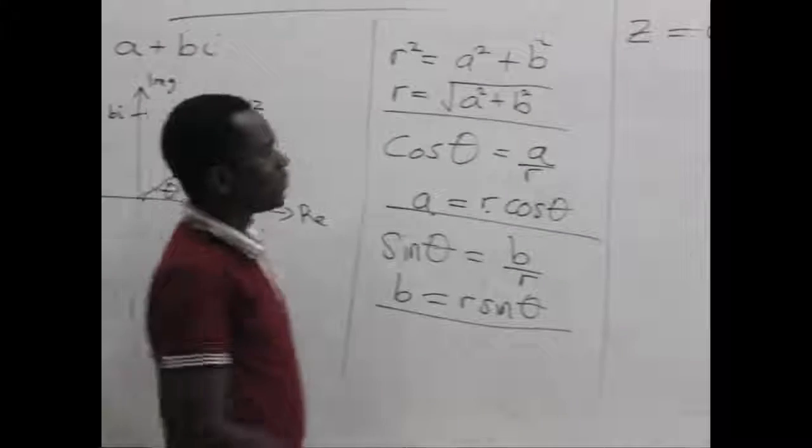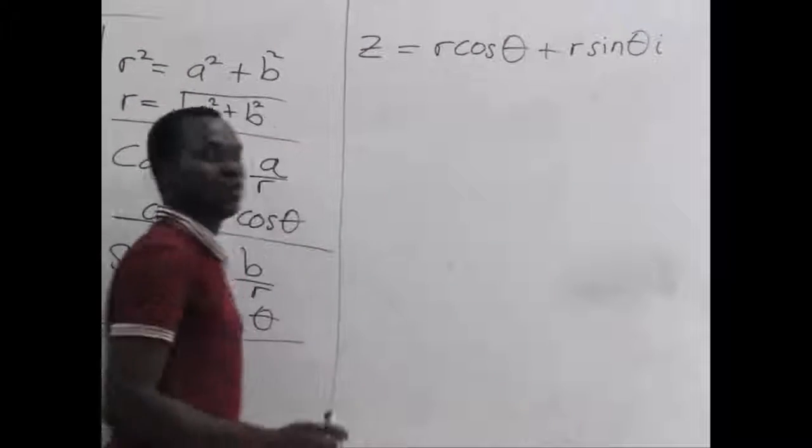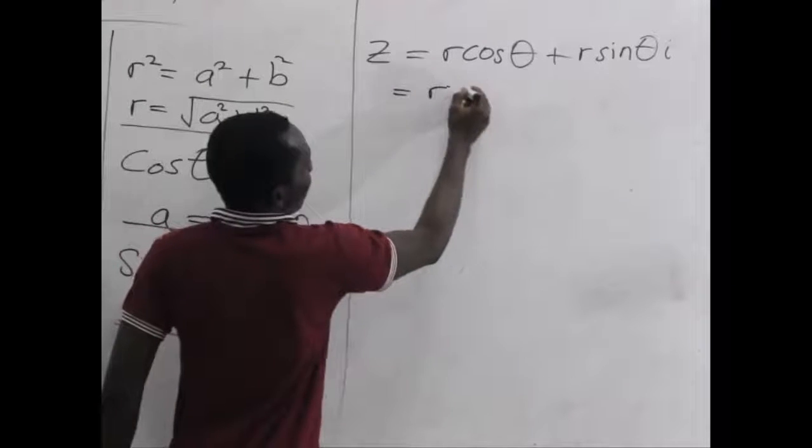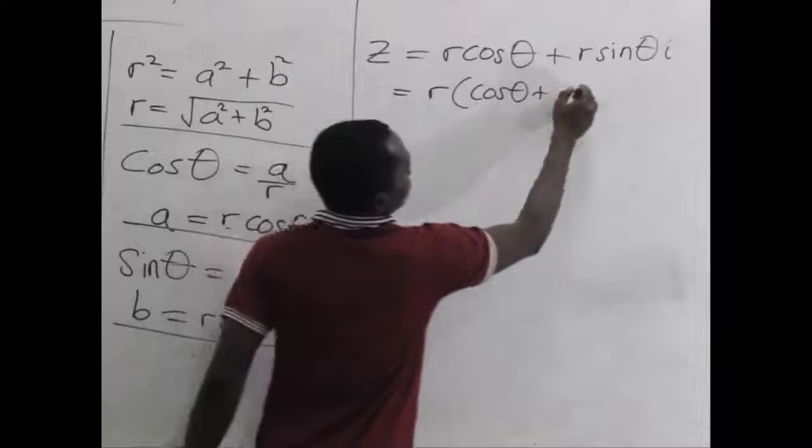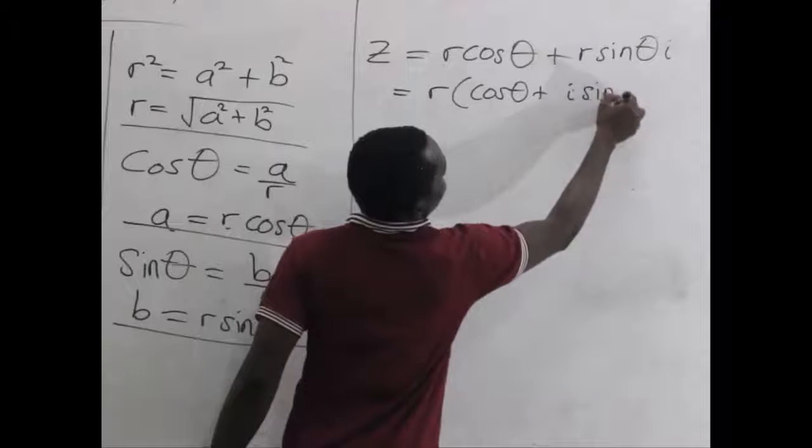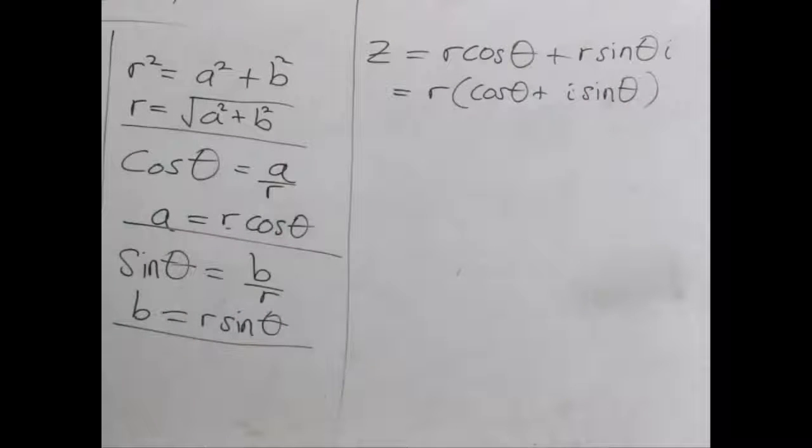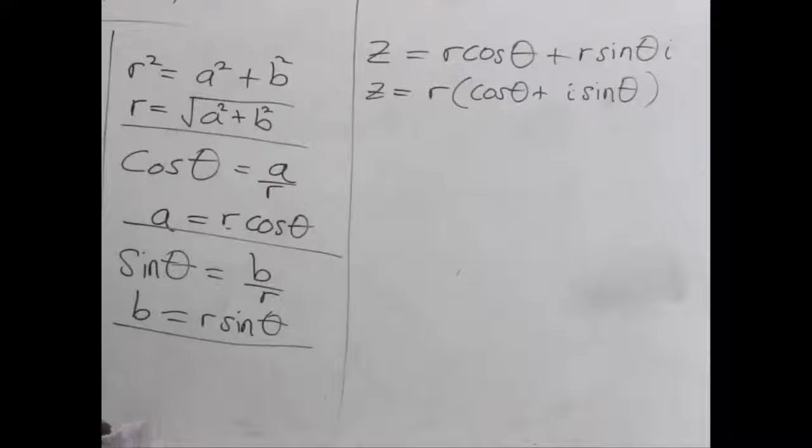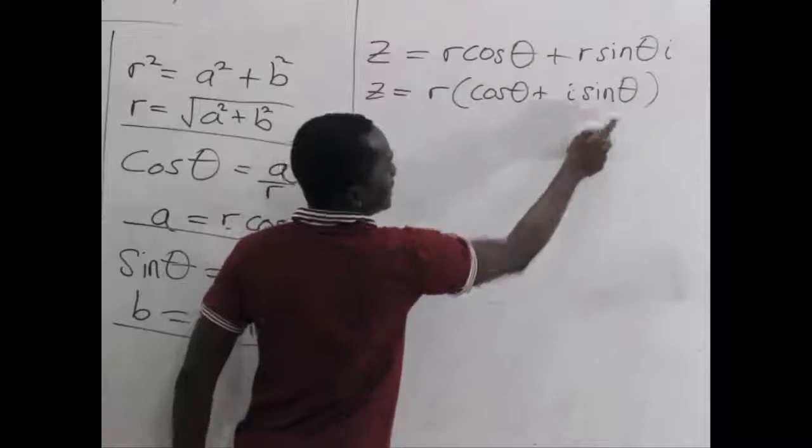Now, what can we notice? We can notice that we have two R's which are common. So we can factor that R out, so that we get R as a factor to have cos theta plus i sine theta. Let's rewrite it in algebraic form. So we have a new equation here, which is Z equals R into brackets cos theta plus i sine theta.